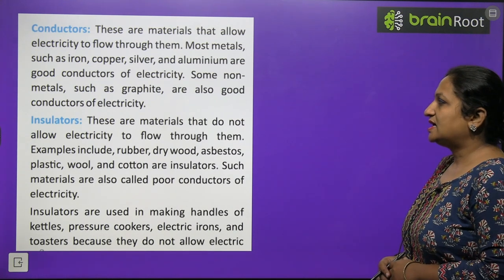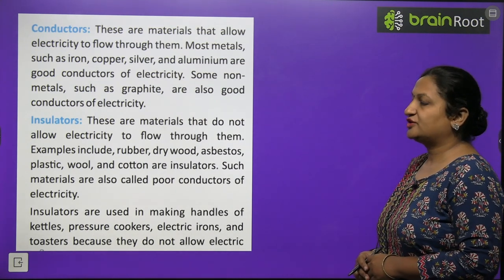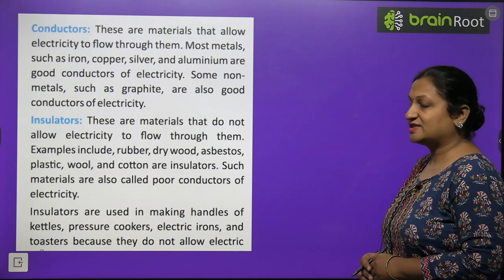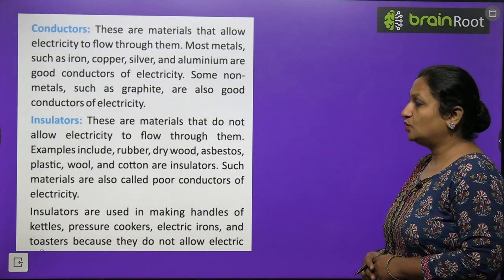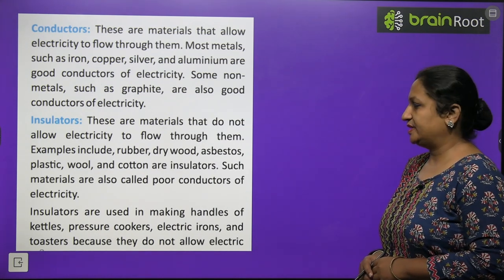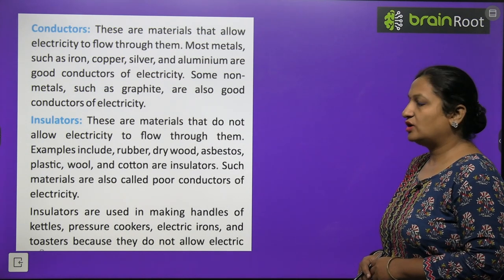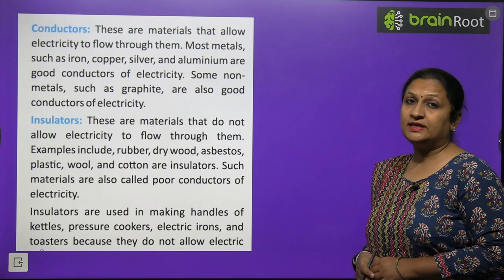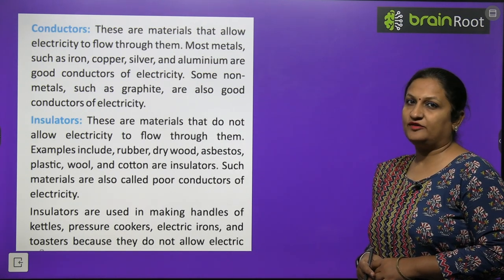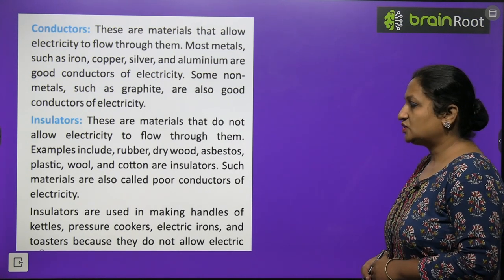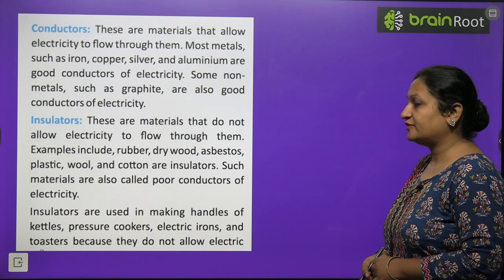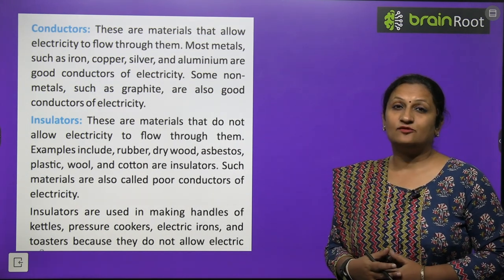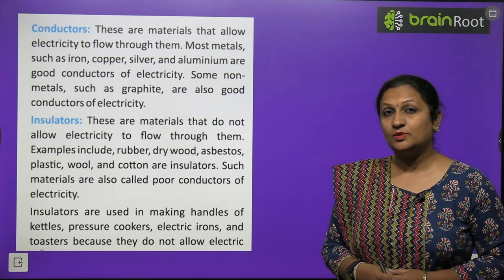Insulators are materials that do not allow electricity to flow through them. Examples include rubber, dry wood, asbestos, plastic, wool, and cotton. Such materials are called poor conductors of electricity because they do not let electricity pass through them. Insulators are used in making handles of kettles and pans, which are made of metals. When we heat them, the handles stay safe because they are insulators.